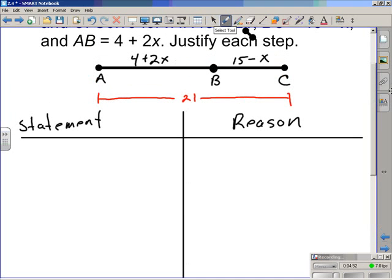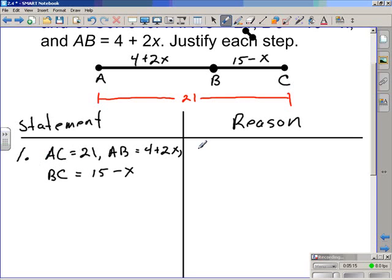So, our first statement and any proof should be a statement of what is given. And in this particular problem there is a little bit more given than in the last problem. In this problem we are told that the measure of segment AC is 21, the measure of segment AB is 4 plus 2x, and we are also told that the measure of segment BC is 15 minus x. That's what given. And in a proof for it to be a formal proof you need to write down what's given. The statement is the information you are given. And the reason is given.